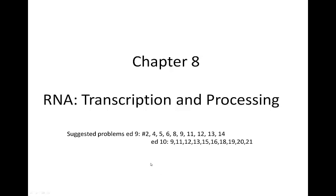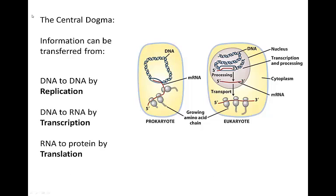This short video will be an introduction to the process of transcription, or the formation of RNA. Where does this fit into the central dogma and the flow of information in the cell? Starting with DNA, which is the source of the genetic material, transcription is the process whereby DNA is used as a template to make a new molecule called RNA, shown here in red. The RNA then provides information needed to produce a protein, and this process is called translation.